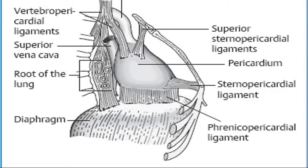When the diaphragm draws down, it pulls the entire thoracic cavity down, increasing the diameter of the thoracic cavity.